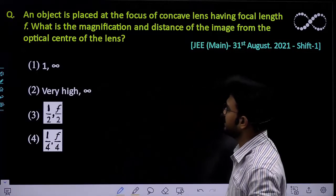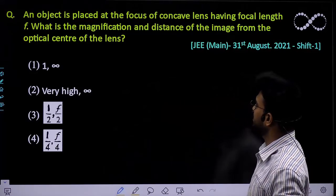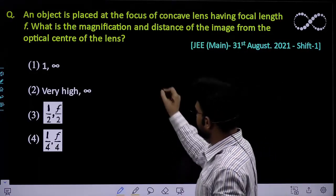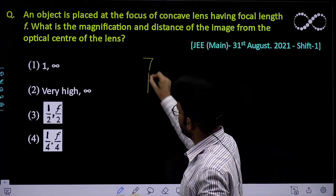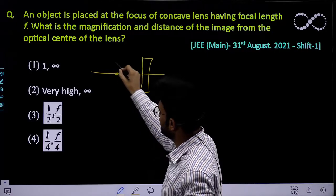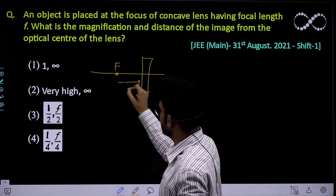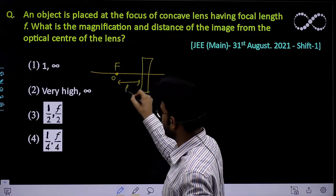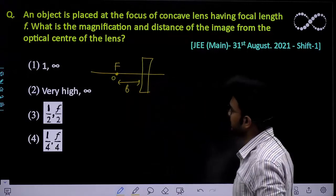Let's look at this question. An object is placed at the focus of a concave lens, so the object distance is f, where f is the focal length of the lens.